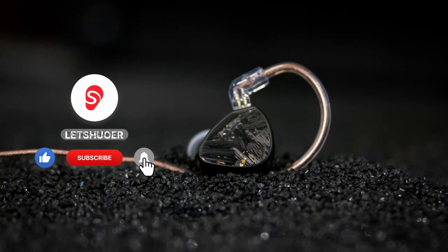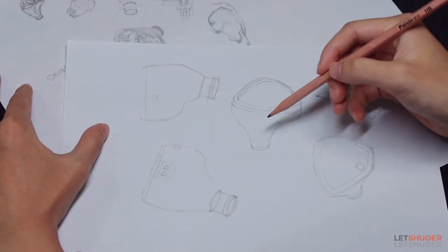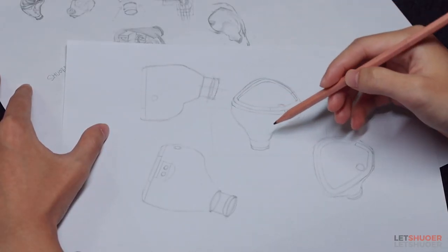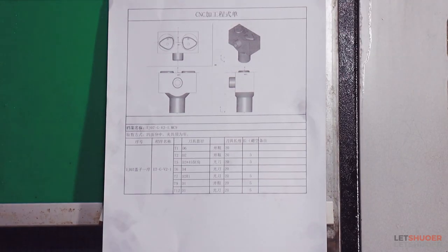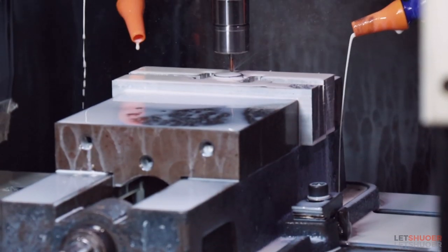Hey there, today we would like to talk about the production of metal chassis for IEM. Let's dive in to see how the chassis of the EJ07M came to be.